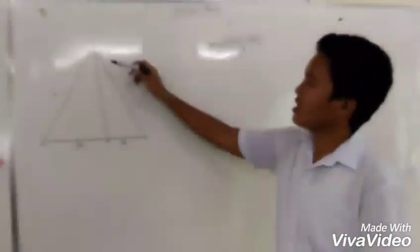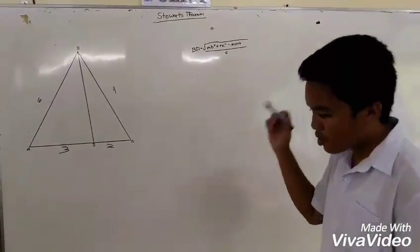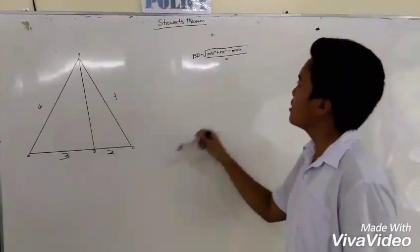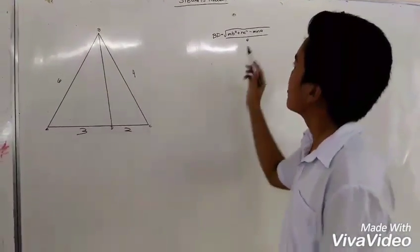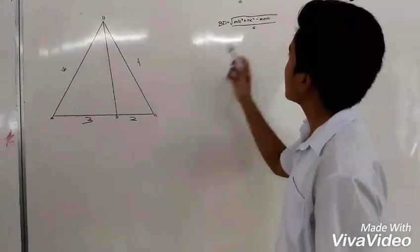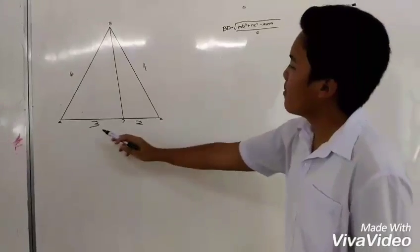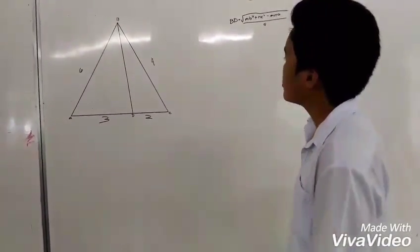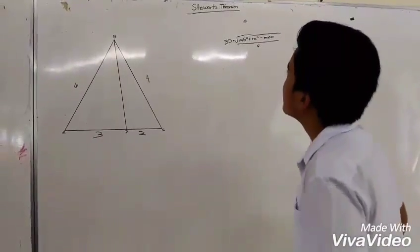Now we will be finding the values for this diagram using the Stewart's theorem. The theorem states: BD is equal to M times B squared plus M times C squared minus M and A, which is the whole line segment, over A times BD.